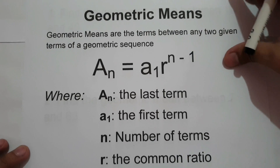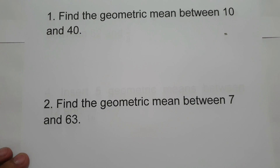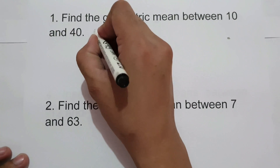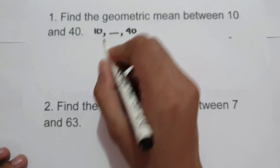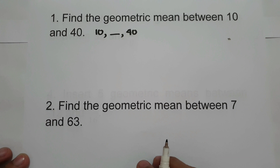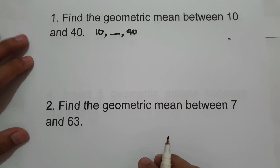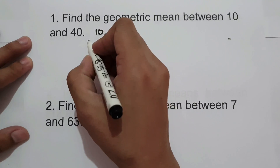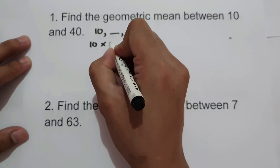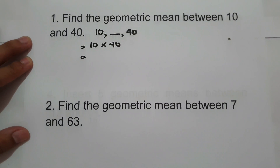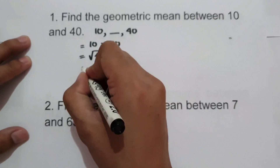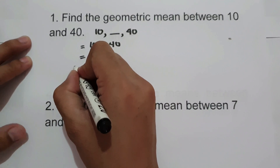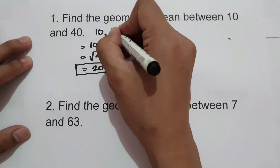Let's start with example number 1: find the geometric mean between 10 and 40. We write the given as 10, blank, 40 — inserting one geometric mean. To find a geometric mean between two numbers, multiply the first and last term: 10 times 40 equals 400, then get the square root of 400, which is 20. So the geometric mean between 10 and 40 is 20.